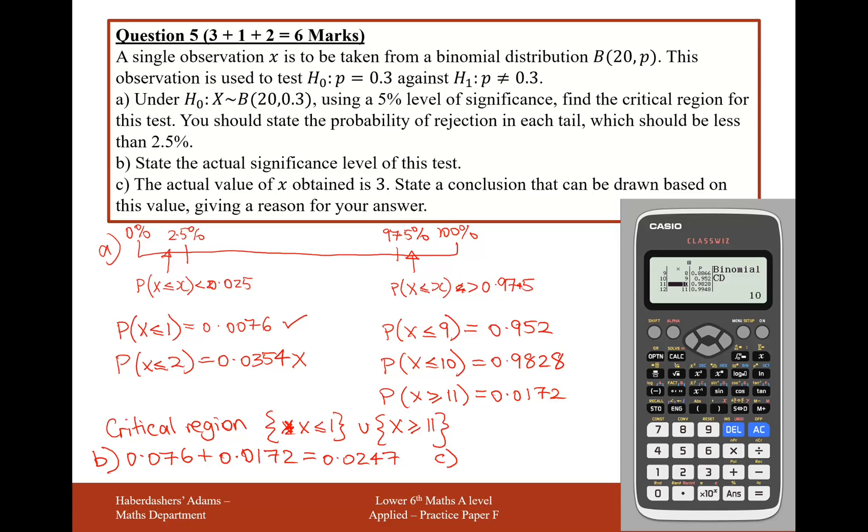Part C now. Given that the actual value of x obtained is 3, state a conclusion that can be drawn based on the value giving a reason for your answer. So 3, that's not in our critical region. That's in between 2 and 10, where we would happily accept that our probability is 0.3. But we don't phrase it like that in statistics. What we do is we say that there's not sufficient evidence to reject the probability equaling 0.3. It could be something different, but we haven't got any evidence to suspect that it's something different.